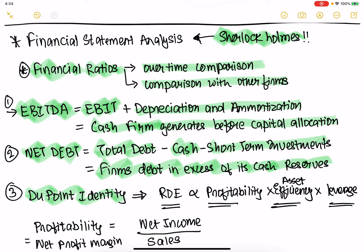If the firm can service its debt holders, that is this net debt. If it's positive, that's the excess money the company owes. Ideally, if it's negative, that's better. The DuPont identity is a good one, which expresses return on equity in terms of profitability, asset efficiency, and leverage.